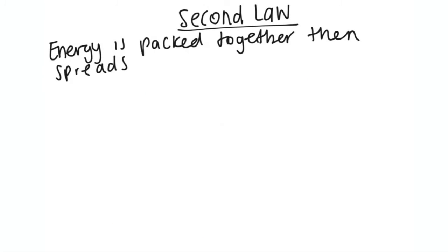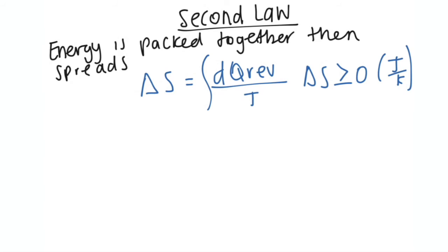So the second law states that energy is basically packed together and then it spreads. So what this looks like in an equation would be the change in entropy, and your change in entropy is always going to be greater than or equal to zero. When are we ever going to use this? Change in entropy is equal to the change in heat over temperature, we're going to integrate that.